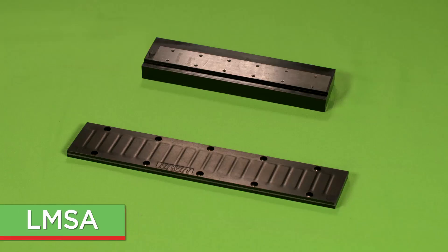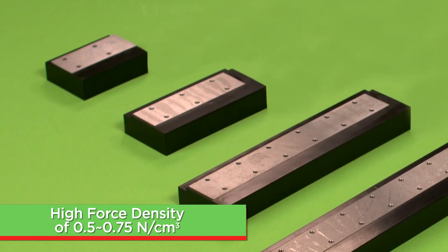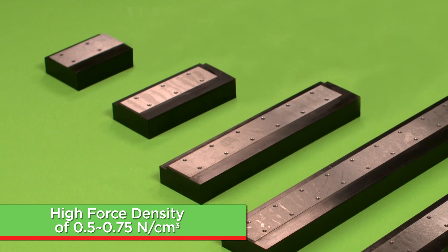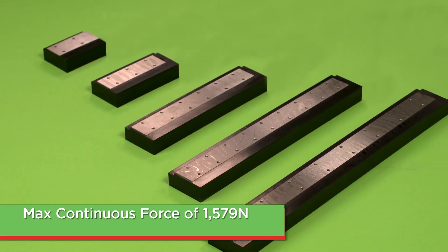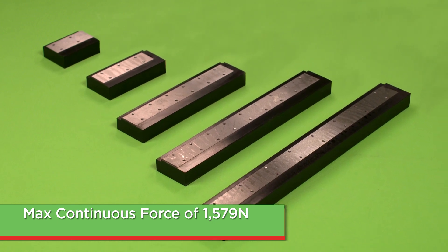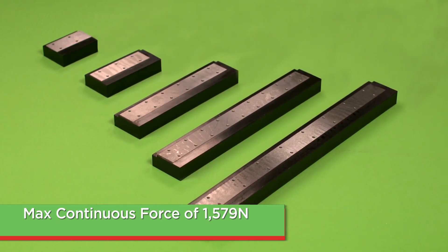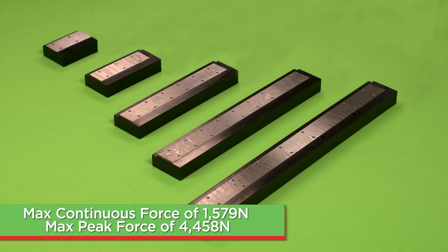The LMSA series is Hiwin's standard iron core series motor. This optimal design offers a wide range of sizes to accommodate most applications. With a high force density range of 0.5 to 0.75 newton cubic centimeters, Hiwin's LMSA series offers a max continuous force of 1579 newtons and a max peak force of 4458 newtons.